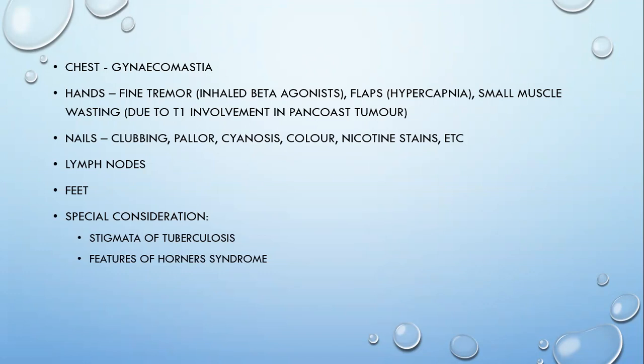In the hands, we can look for fine tremors, which includes salbutamol toxicity. Any patient with bronchial asthma or COPD who is chronically taking inhaled beta-agonists either by nebulization or a puffer will have fine tremor. The same patient, if he is having flapping or coarse tremors, it indicates respiratory failure due to CO2 retention — a flapping tremor or asterixis. Small muscle wasting due to T1 involvement can signify T1 nerve root involvement in a Pancoast tumor or upper lobe involvement. In the nails, we look for clubbing and koilonychia. The color of the nail is important because there is a syndrome called yellow nail syndrome, which has a specific association with bronchiectasis. Nicotine stains can be looked for both in the nails as well as in the oral cavity.